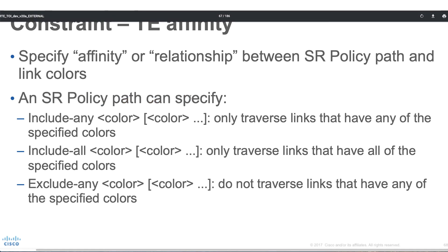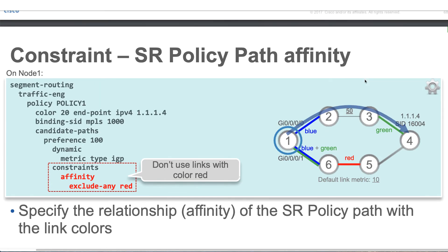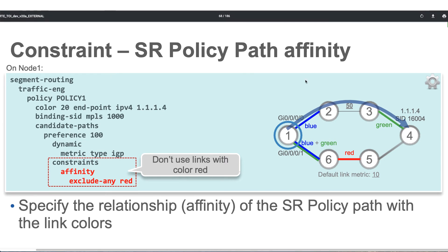Now when configuring an SR policy, we can use the keywords include any, include all, or exclude any to pick or avoid colors. In the constraint, we say SR policy path affinity. Here the optimization objective is IGP, and the constraint is affinity exclude any red. That means when calculating an IGP path, don't pick any link that has the color red. In this case, there is a color red between nodes 6 and 5, so the system will not pick that link, and node 1 will pick only the top path.